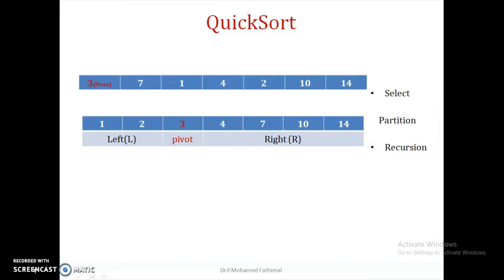First, selecting the pivot element. So initially, we are selecting the pivot element as either the first position element or the last position element. Now we have to partition. For partitioning, we have to compare the pivot element with each and every other element in the array.